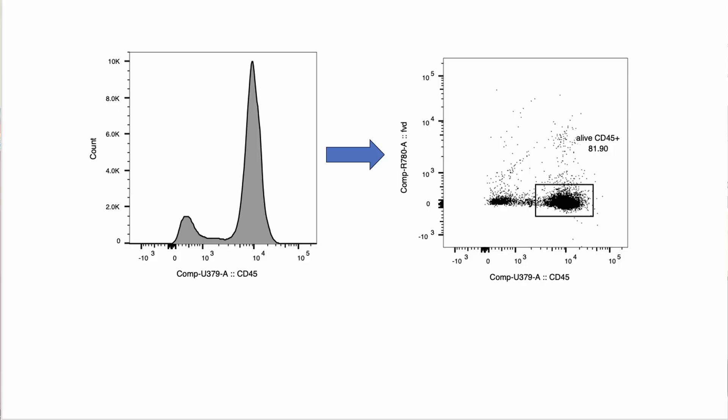However, the power in using dot plots comes from being able to look at multiple parameters at the same time. So more often than not, you'll probably see it represented more like this with two markers side by side or two markers against each other and looking at how expression of those markers compare to one another.